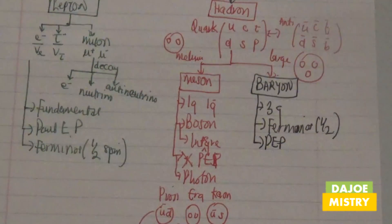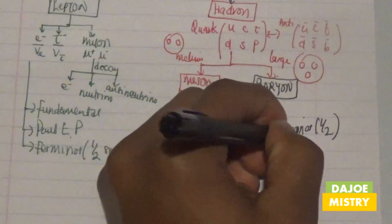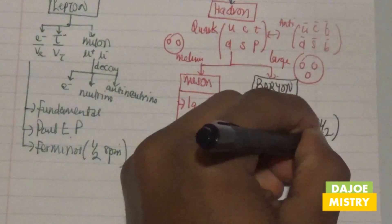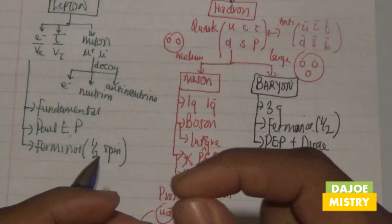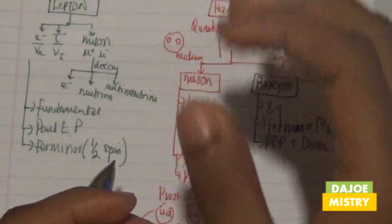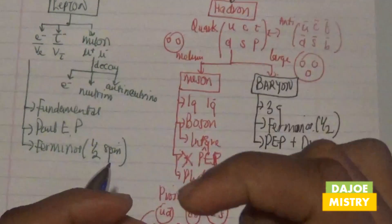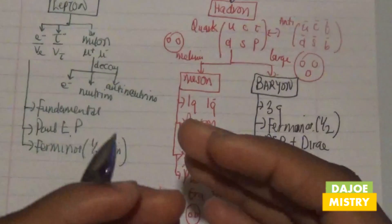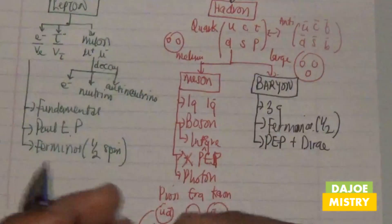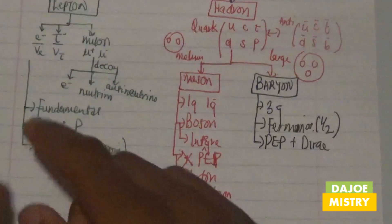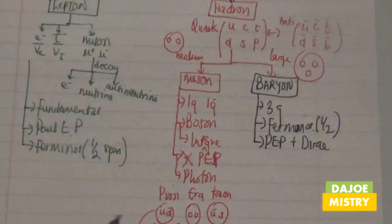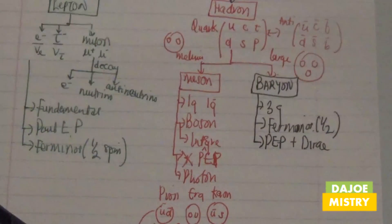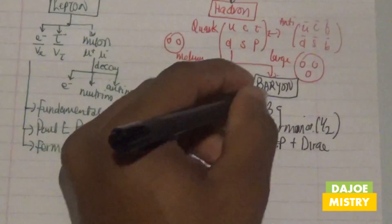Baryons obey the Pauli exclusion principle. They also obey Dirac statistics, which shows that an electron always generates a hole consisting of a positron — so an electron will also have an antiparticle. Once you move from one point to another, you form an antiparticle state. This is what the Dirac concept describes for these particles.